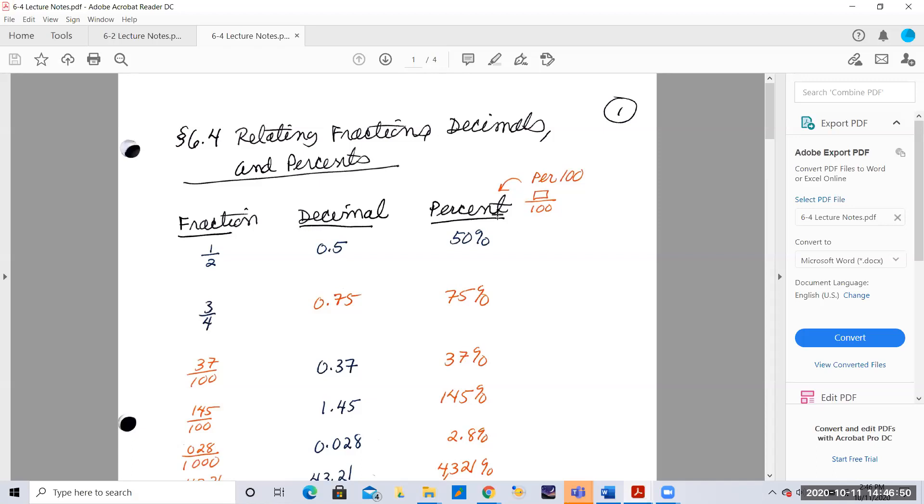The word percent literally means per 100, so that means how many divided by 100. This gives us a good way to make comparisons. If somebody said there was a certain number of people at the airport were late,